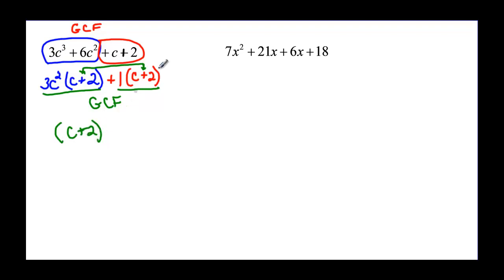If we factored the first part right, these two should match. So my greatest common factor is c + 2, and just like before, now I need this 3c² to go with the c + 2. And I need this positive 1, because I already have the c + 2, but I need that positive 1. Now I am completely factored.